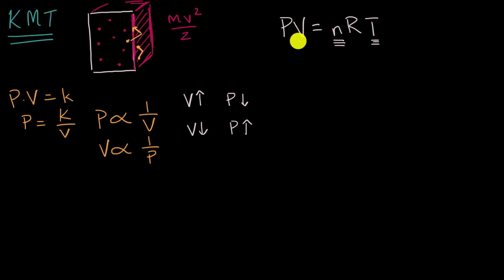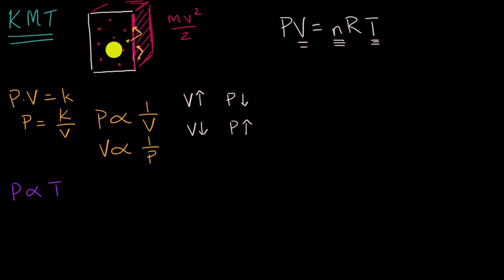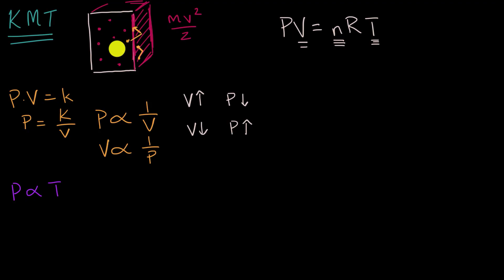Another relationship: if we hold volume and the number of moles constant and look at pressure versus temperature, the ideal gas law says pressure is proportional to temperature. If you increase the temperature, the average kinetic energy increases, so particles hit the sides of the container with more velocity, exerting more pressure. Lower the temperature and kinetic energy drops — particles drift slowly, hitting the container with less force, so pressure goes down. Temperature up means pressure up, temperature down means pressure down. This is known as Gay-Lussac's Law.